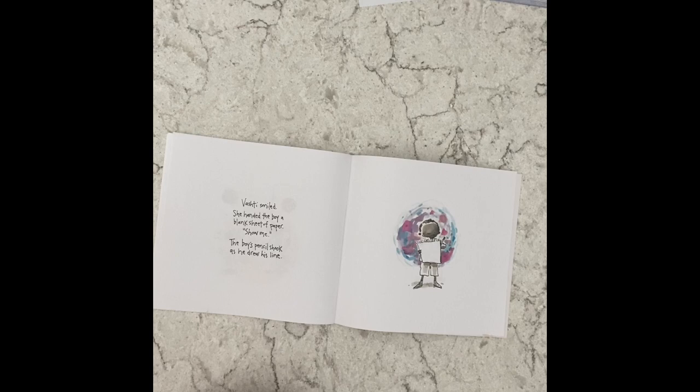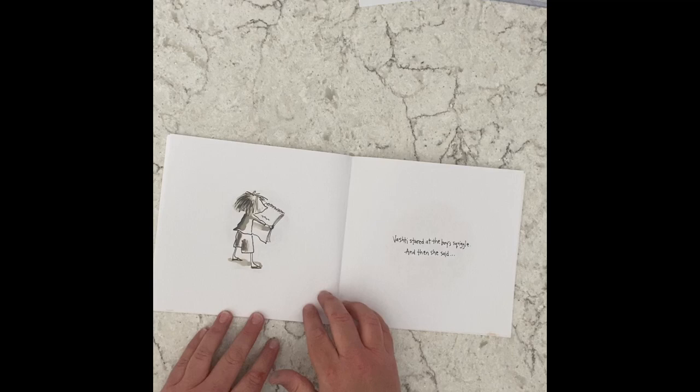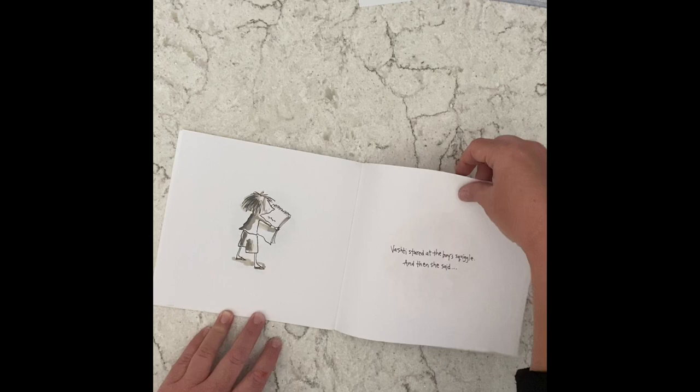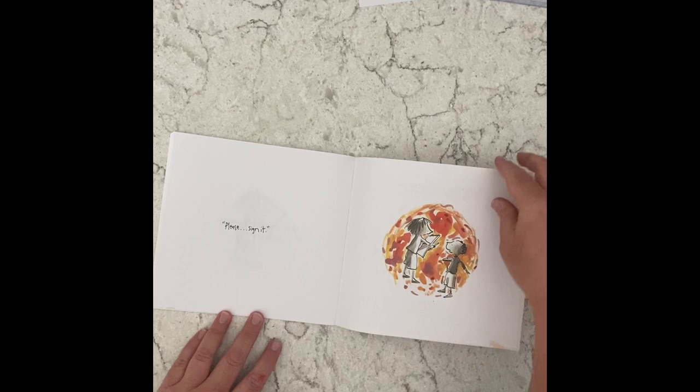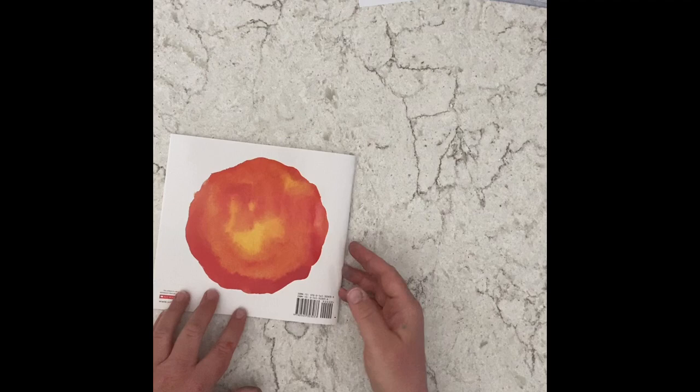He's doubting himself just like she did. Vashti smiled. She handed the boy a blank piece of paper. Show me. The boy's pencil shook as he made his line. Vashti stared at the boy's squiggle and then she said, please sign it. The end.